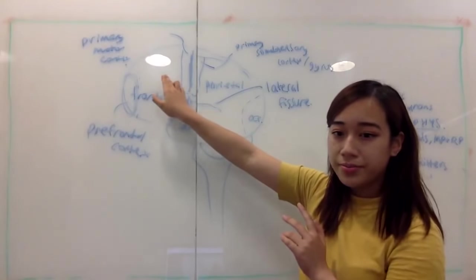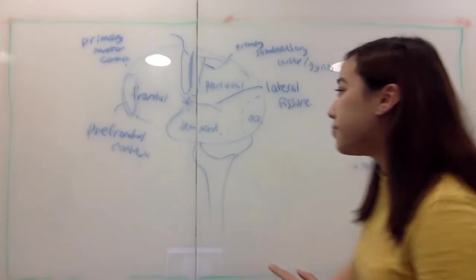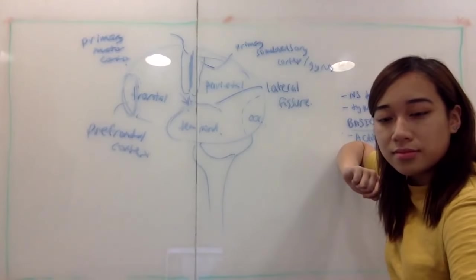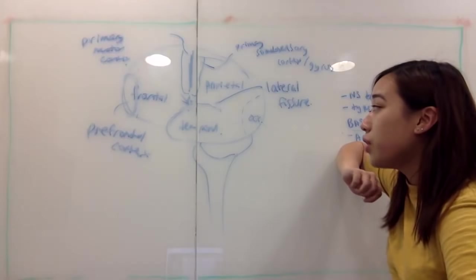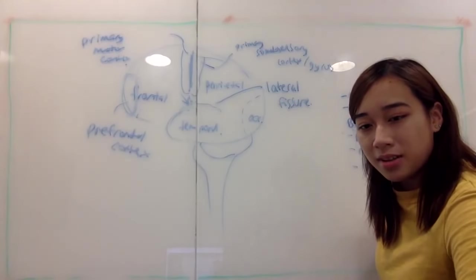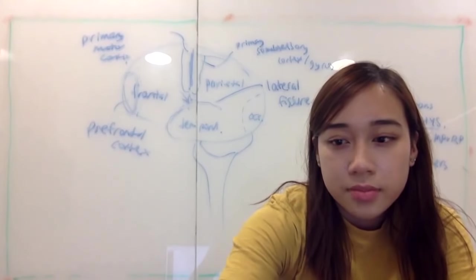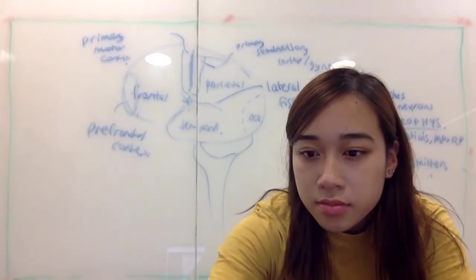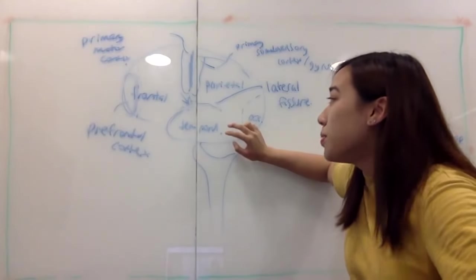So for the frontal lobe, there's going to be motor control, and motor association areas, plus higher order thinking and personality. Does anyone know what the temporal lobe is in charge of? There are a few key things — auditory recognition and memory are the two big ones for the temporal lobe. Temporal and parietal lobes are both involved in quite a bit of integrative processes.